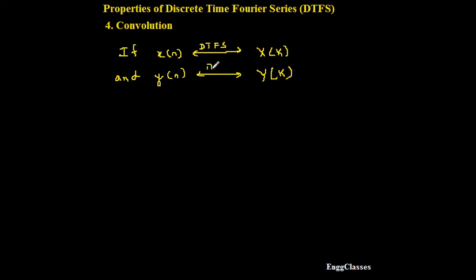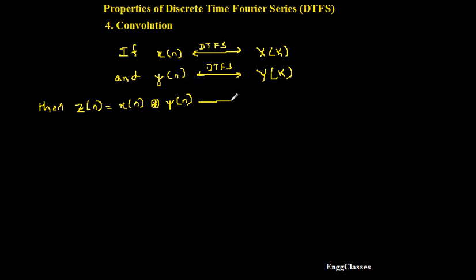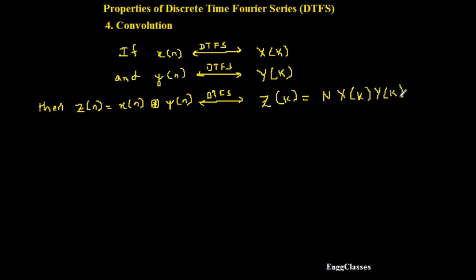...y of n leads to Y of k, again by taking DTFS. Then the new signal z of n, which is equal to x of n circularly convolved with y of n — also called periodic convolution — leads to Z of k, which equals N multiplied by X of k multiplied by Y of k.